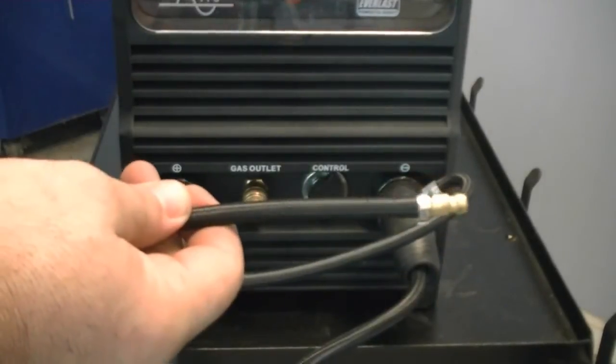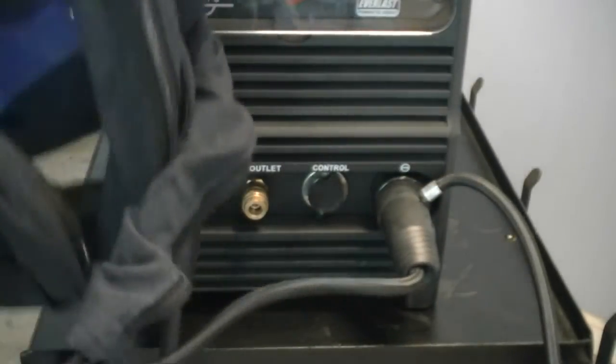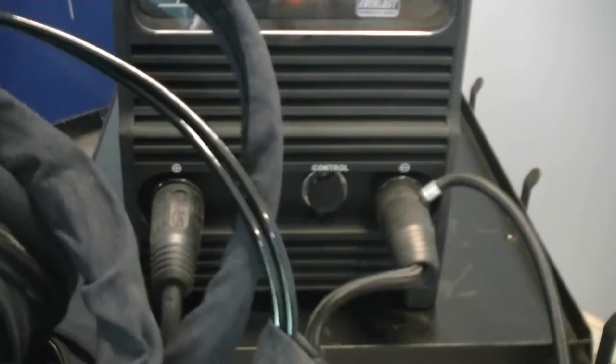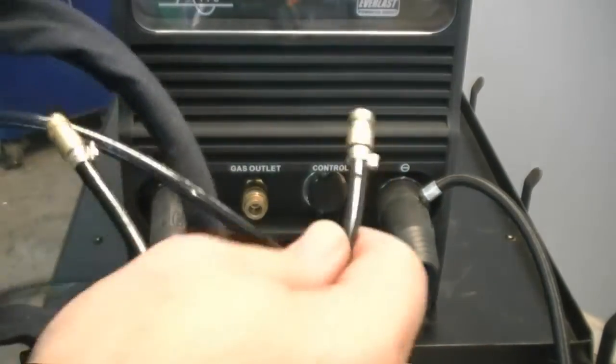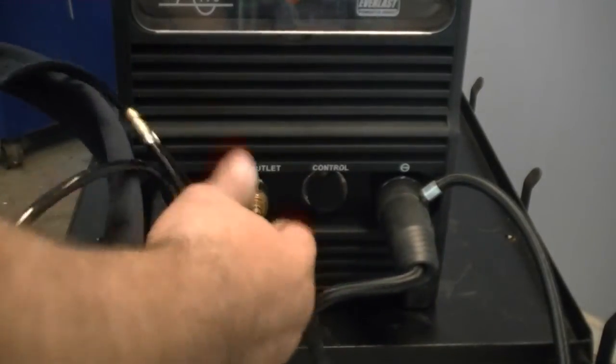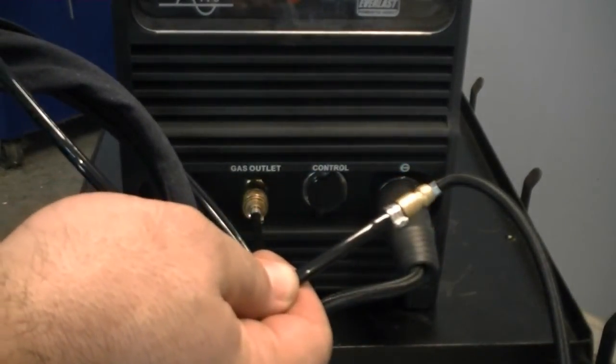However, the same line that was the gas line on the 9 series has now become the water return line from the torch to the cooler. The remaining two lines are the water in line from the cooler and the gas line. The gas line is a smooth hose while the water in line has a braided appearance.